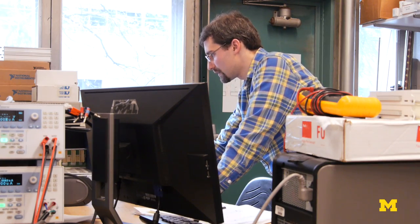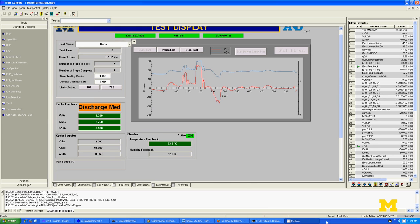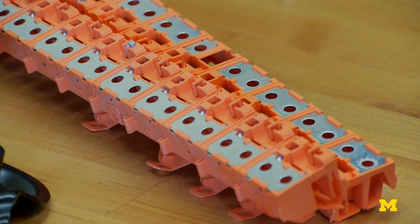If we can come up with some models that really tell us these are the key parameters in the system that we really need to be able to monitor and control in order to increase the reliability, then that's something that can enhance the life of this battery in a vehicle application.